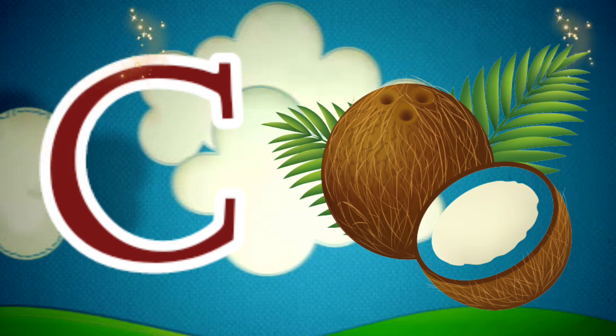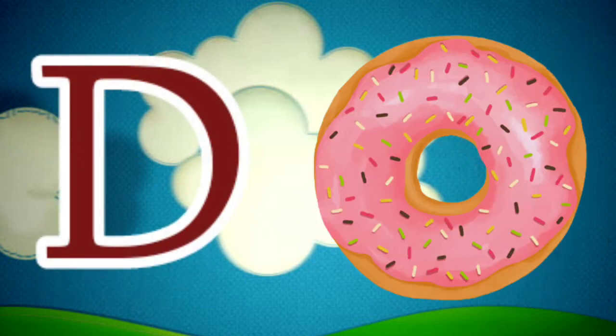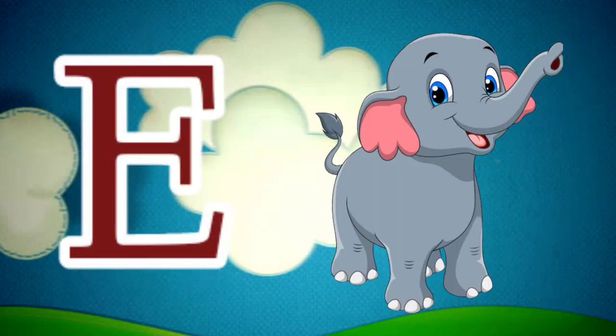C is for Coconut. Ka, Ka. Coconut. D is for Donut. Da, Da. Donut.